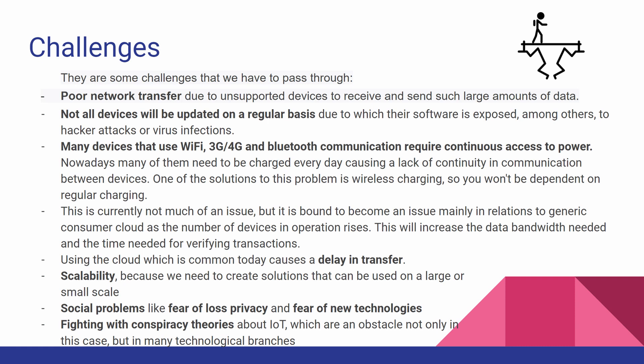Many devices that use Wi-Fi, 3G, 4G, or Bluetooth require continuous access to power. Nowadays many of them need to be charged every day, causing a lack of continuity in communication between devices. One solution to this problem is wireless charging. Next is scalability, because we need solutions that can be used at both large and small scale. Social problems like fear of lost privacy, fear of new technologies, and conspiracy theories about IoT are also an obstacle in many technological branches.